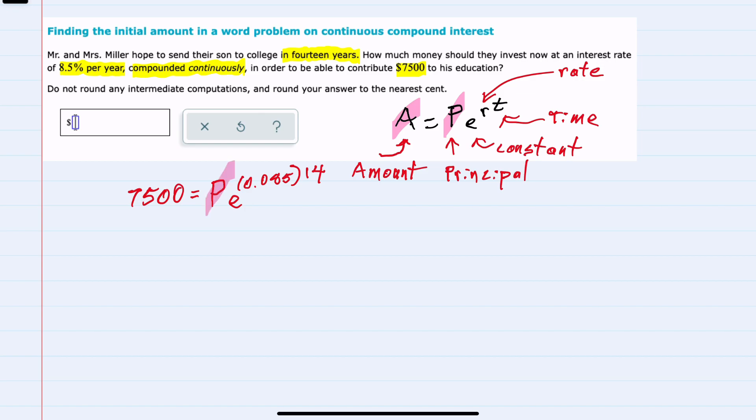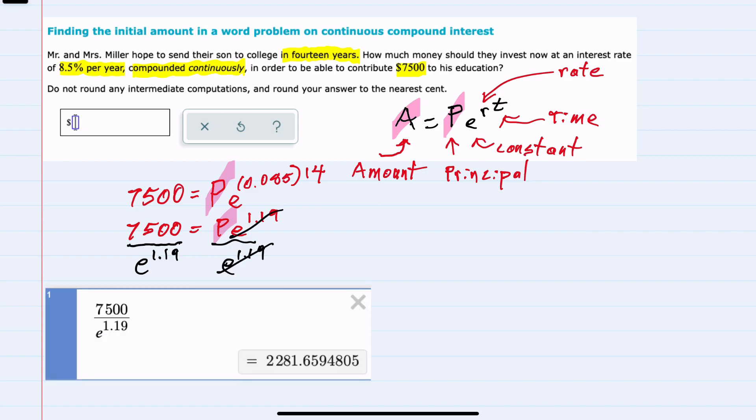And again, we're solving for P, but I can start by multiplying those two values in the exponent and say that that is E to the 1.19. And then to solve for P, I can divide both sides of the equation by E to the 1.19. This cancels everything on the right except for the P that we are looking for.